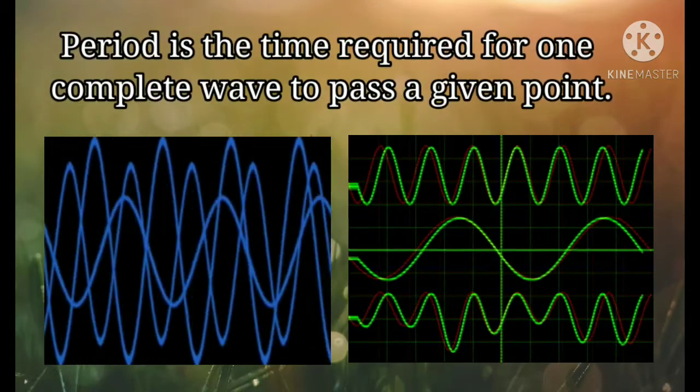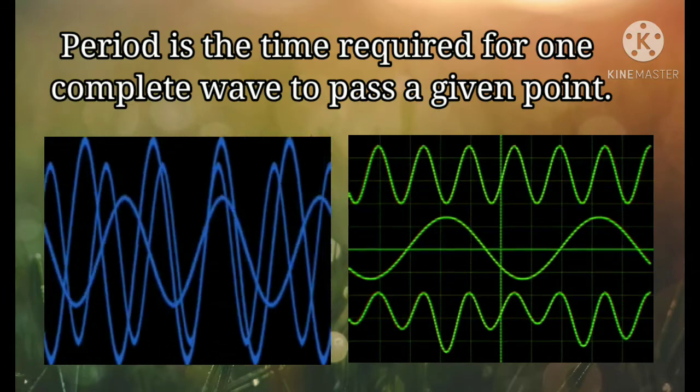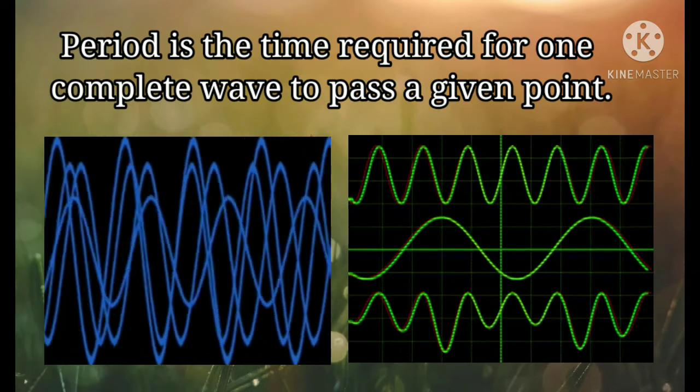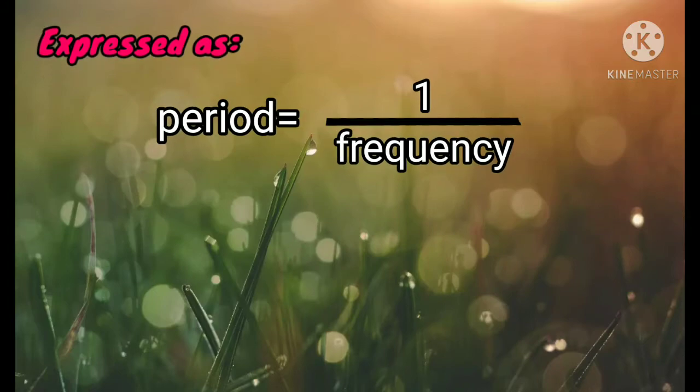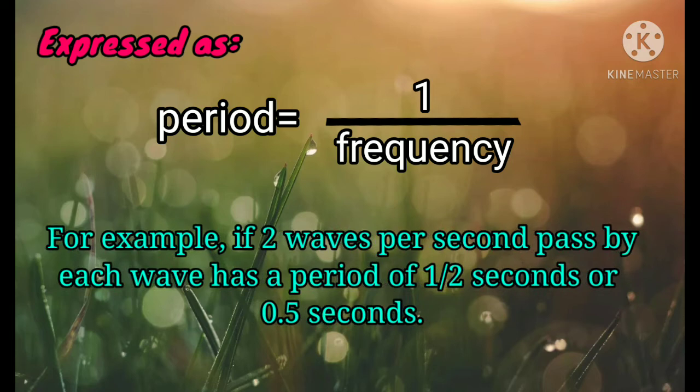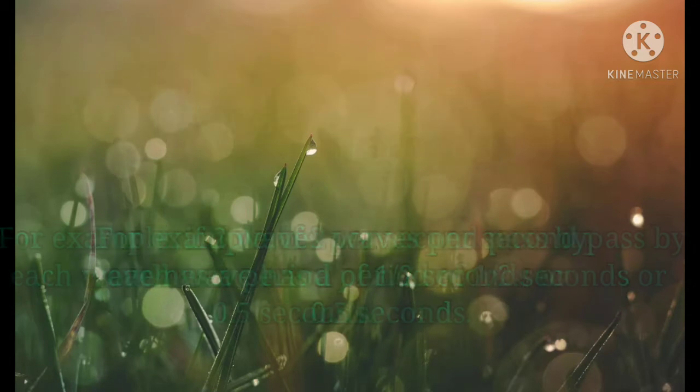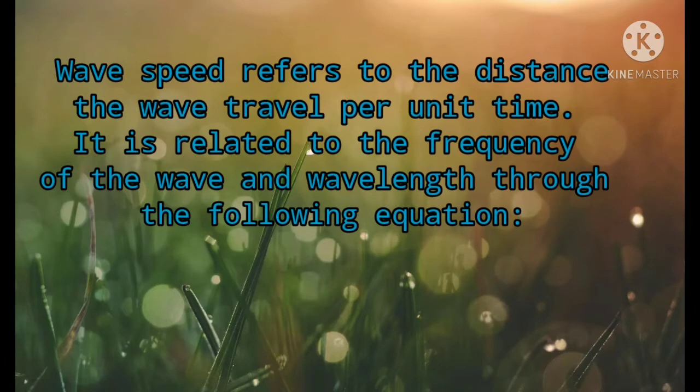Period is the time required for one complete wave to pass a given point. Expressed as period is equal to one divided by frequency. For example, if two waves per second are passing by, each wave has a period of one-half seconds or 0.5 seconds.